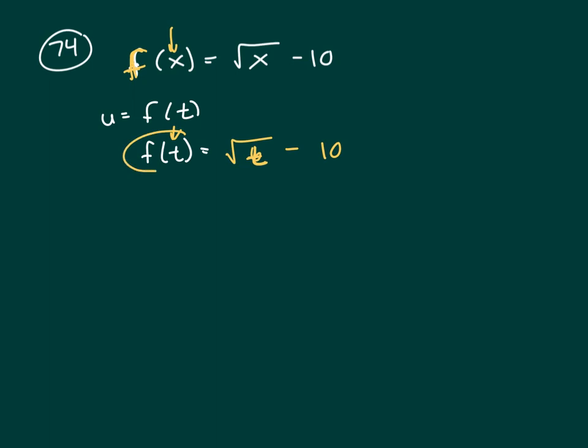Now what's another name for f of t? Another name for f of t is u. So u equals the square root of t minus 10. And I'm trying to, what is t in terms of u? So I'm trying to solve for t.